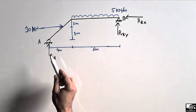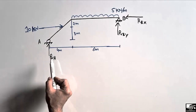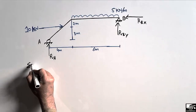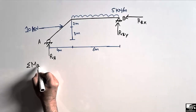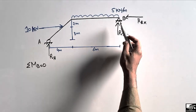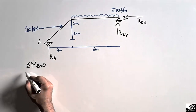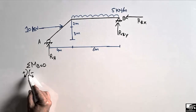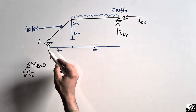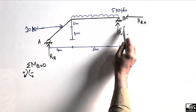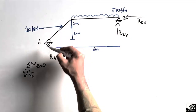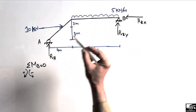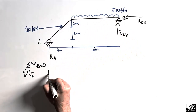First, let's find RA. We take the summation of moments at point B equal to zero, so all moments about point B will be equal to zero. The sign convention is: clockwise moment is positive, anti-clockwise moment is negative. RA acts upward, so it will create a clockwise moment about point B, meaning RA is positive.